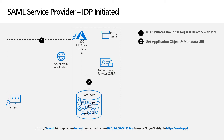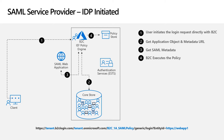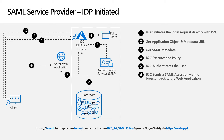B2C will search for the application using the entity ID. Once the application is found, it will retrieve the federation metadata. The information retrieved from the SAML application object is used to determine what assertion consumer service the issued token should be sent to, and other token signing and encryption parameters. Once that's done, B2C will execute the policy, authenticate the user, and send the token to the application via the client redirect, so the application can validate the token and let the user in.